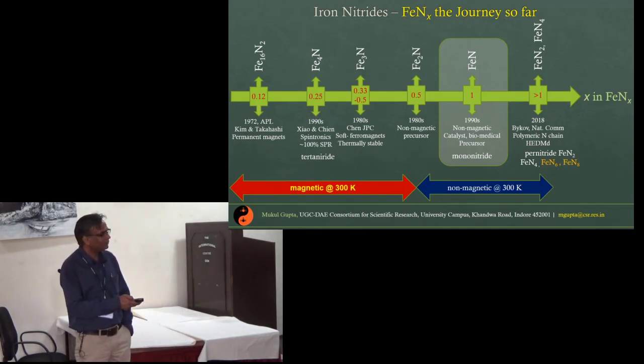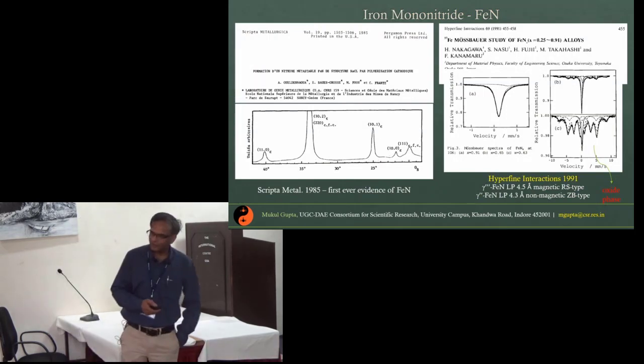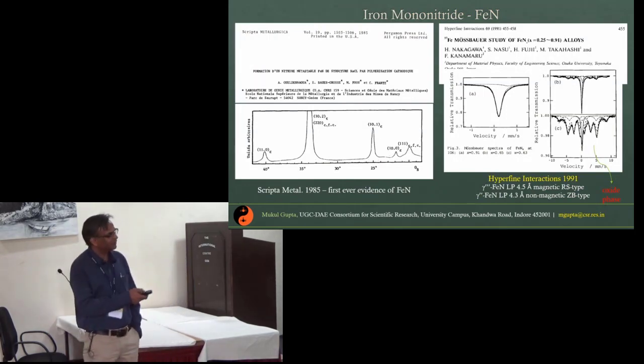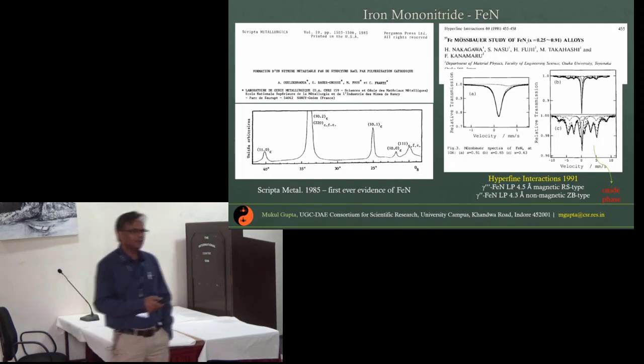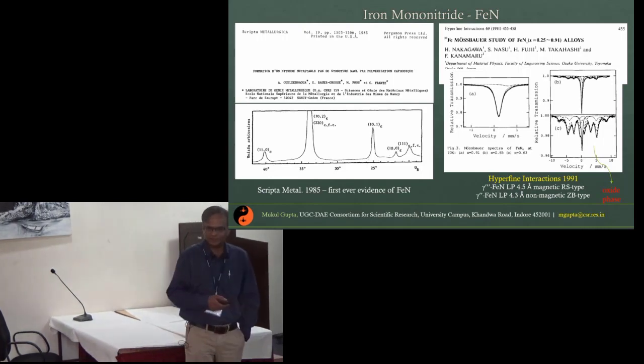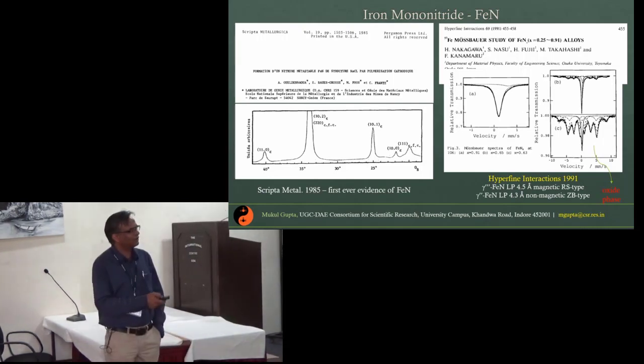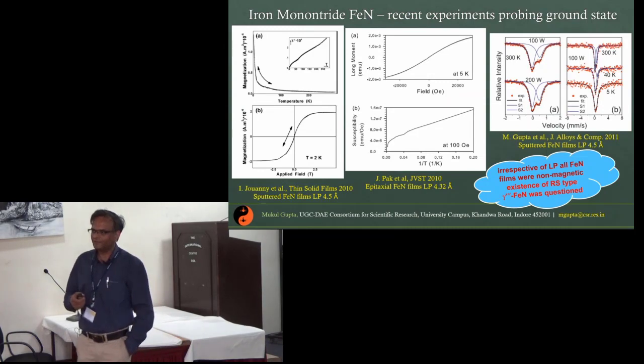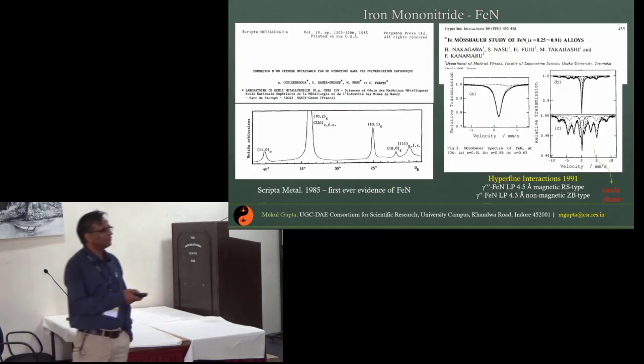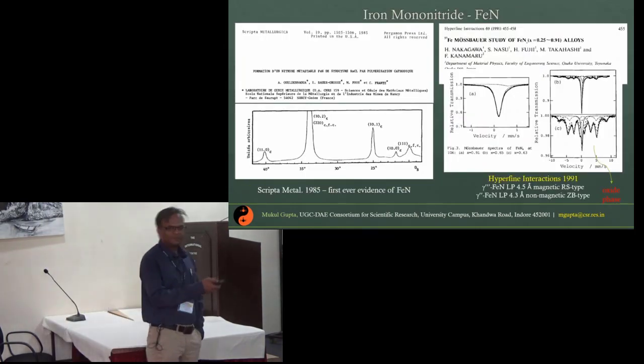Mono-nitride films, the first ever work was published in 1985. Soon after that there were some works done in the early 90s to probe the structure as well as magnetism. At low temperature, two types of phases were found: one is non-magnetic, other was showing a magnetic signature. But in all these samples there was oxide phase also present and it was not known from where this magnetism is coming.